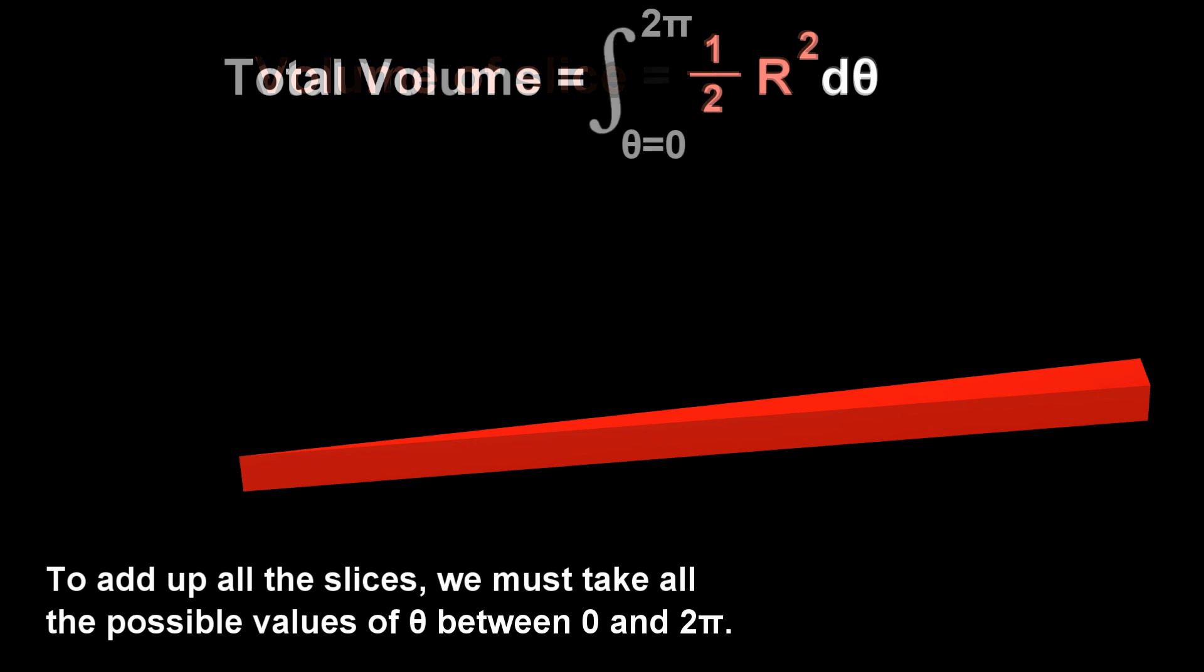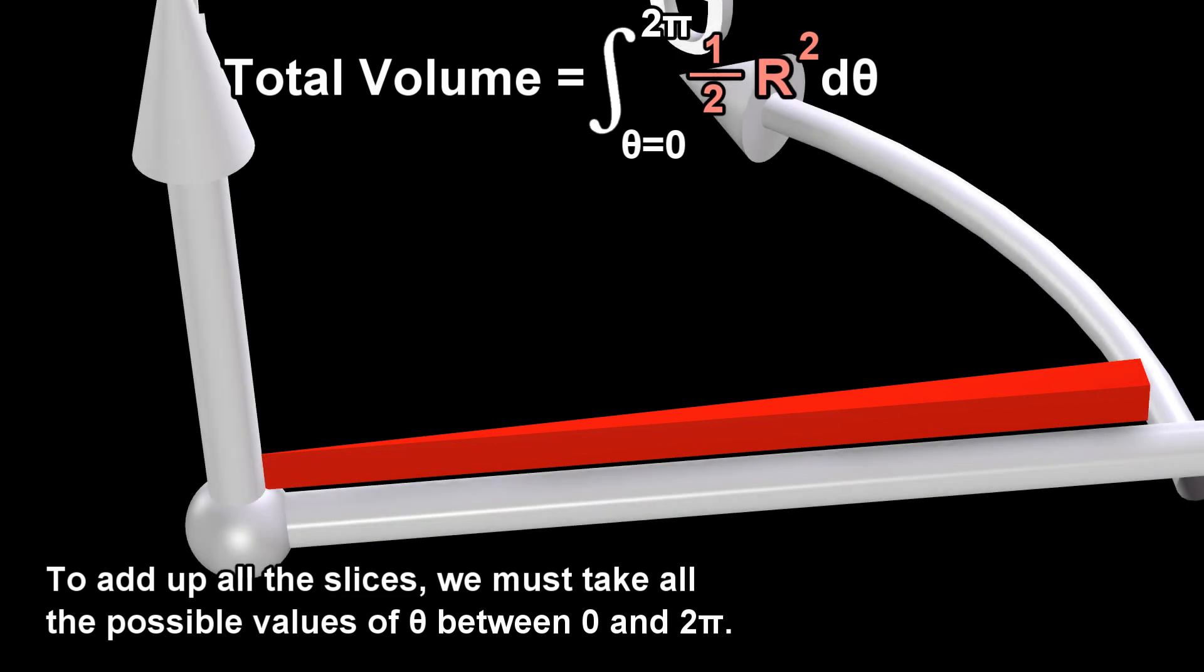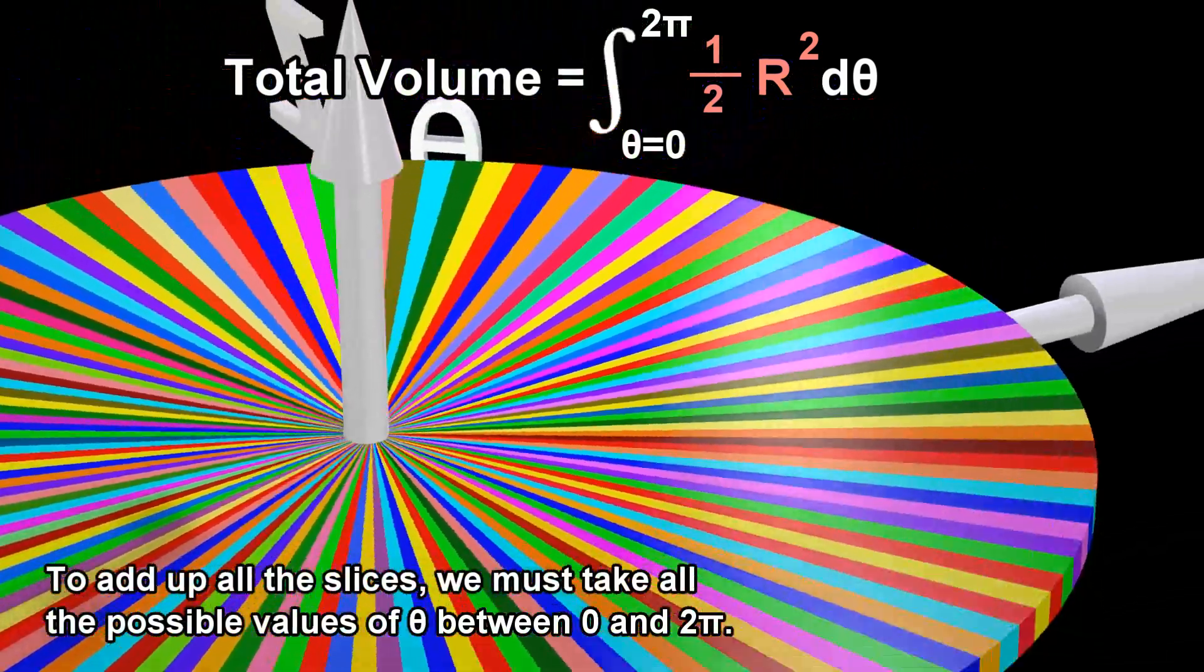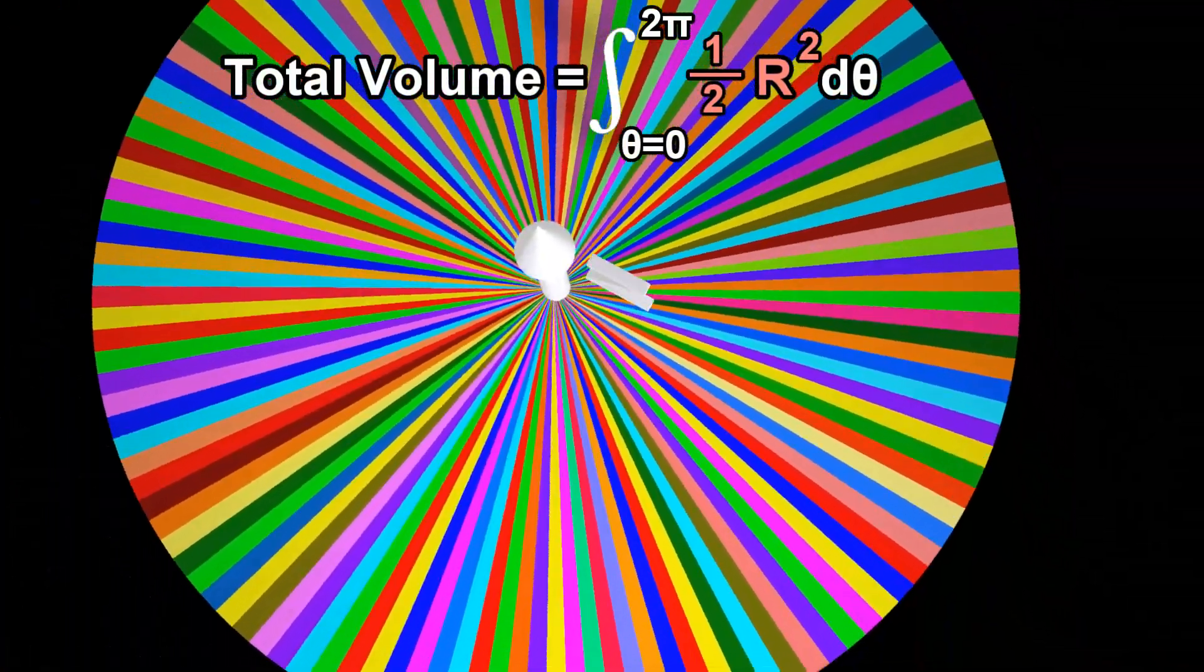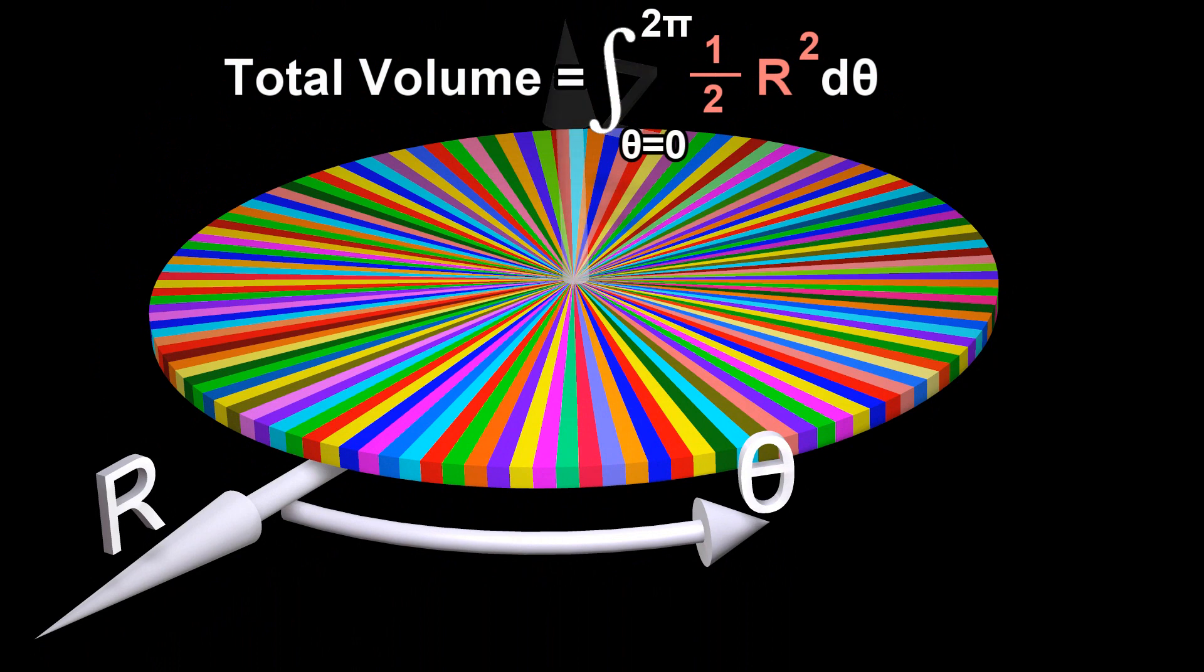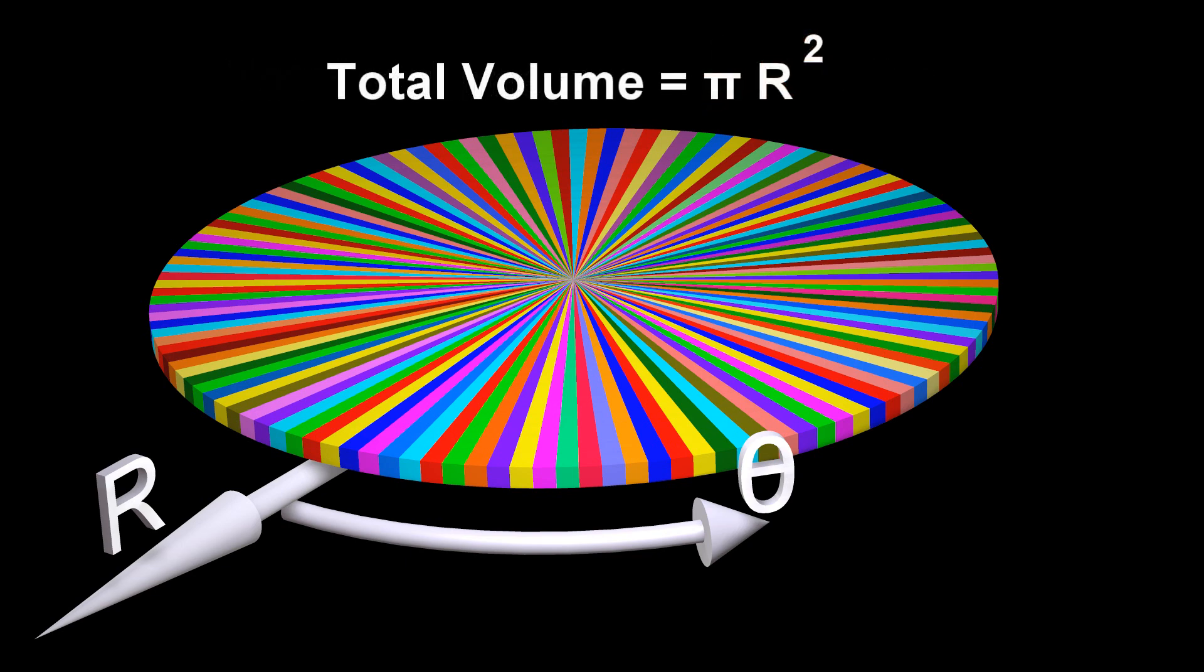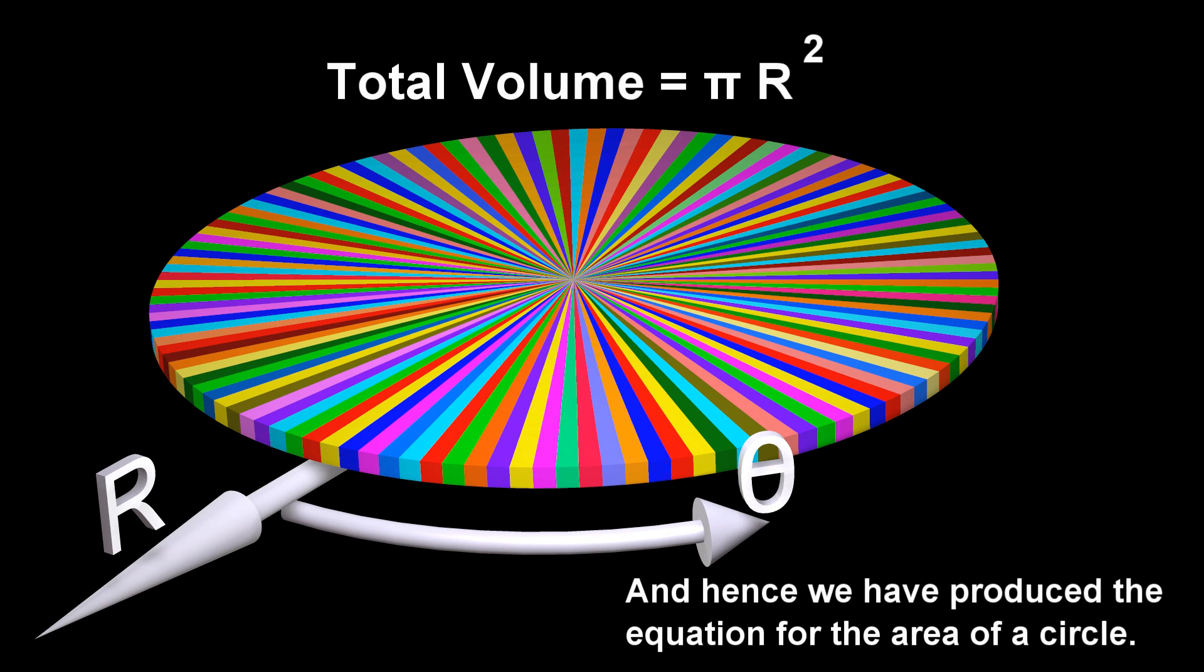To add up all the slices, we must take all the possible values of θ between 0 and 2π. And hence we have produced the equation for the area of a circle.